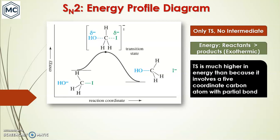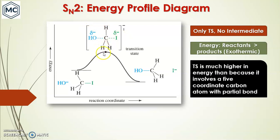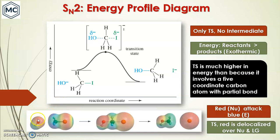Next is the energy profile diagram of the SN2 reaction. The energy of the starting material substrate is shown, and the energy of the product (alcohol) is lower — this is an exothermic reaction. There is only one transition state and no intermediate. The transition state has higher energy because it involves a five-coordinated carbon atom with partial bonds.